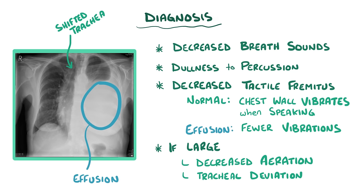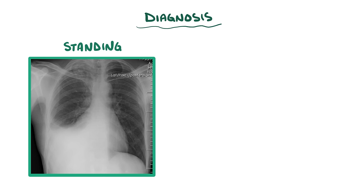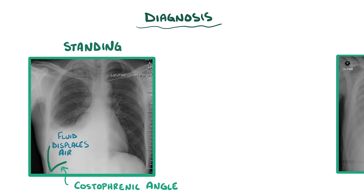On an X-ray taken of someone standing upright, the pleural effusion fluid can settle into the costophrenic angle, which is where the diaphragm meets the chest wall, and cause blurring of the angle as fluid displaces the air that's usually there. On an X-ray taken of someone lying down, gravity will cause the freely mobile pleural effusion to settle along the chest wall, creating a layering effect.